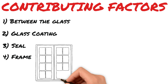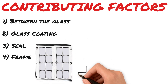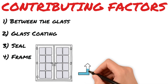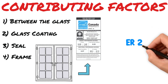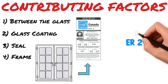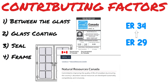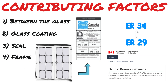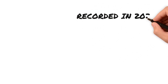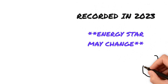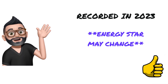Manufacturers consider all of these factors, create a window, and have it tested. Then an ER, or energy rating, is assigned to that model. Before 2020, the minimum ER rating was 29, and in 2020 it was increased to 34. Natural Resources Canada is increasing requirements regularly, so manufacturers get innovative to make more efficient products. I will leave you with a link to Natural Resources Canada's website so you can find more detailed information about the Energy Star program.